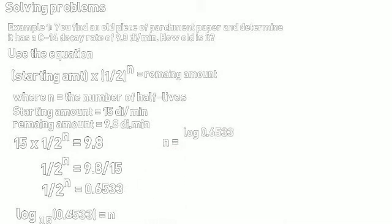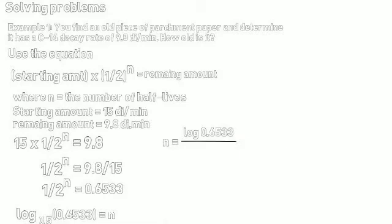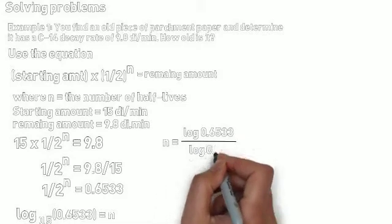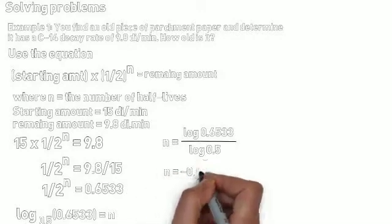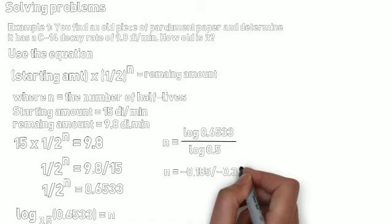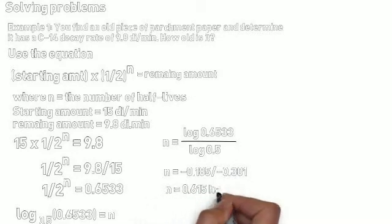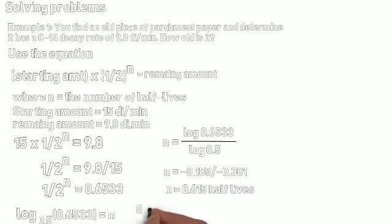Which means, as we did in the last video, n equals the log of 0.6533 divided by the log of 0.5. We evaluate those. These are, of course, base 10 logarithms. So n equals negative 0.185 divided by negative 0.301. So n equals 0.615 half-lives.